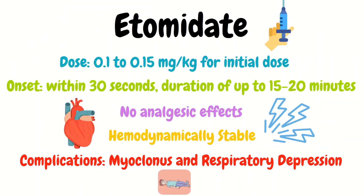The typical dosing for etomidate is 0.1 to 0.15 milligrams per kilogram as the initial dose, with onset within 30 seconds and duration up to 20 minutes. It does not have analgesic effects; however, it is very hemodynamically stable, meaning it won't affect blood pressure as much compared to other agents. Complications include myoclonus and respiratory depression — that is why we have all necessary supplies and equipment ready, and why you as the nurse are monitoring the patient closely throughout.